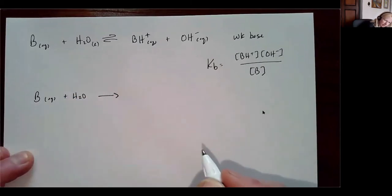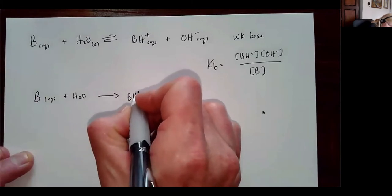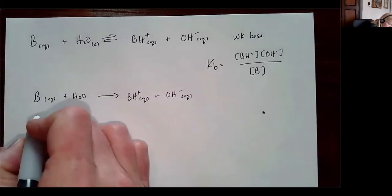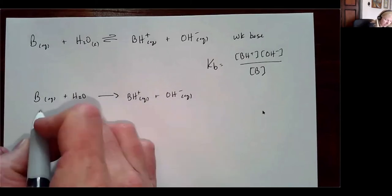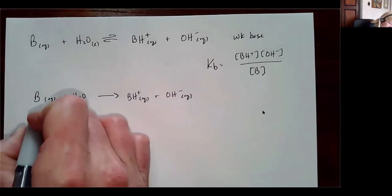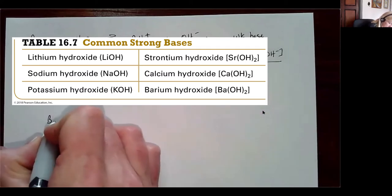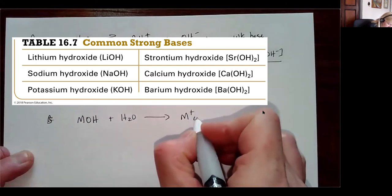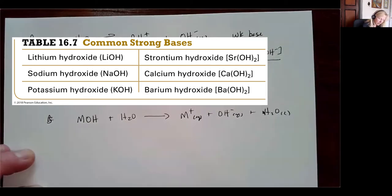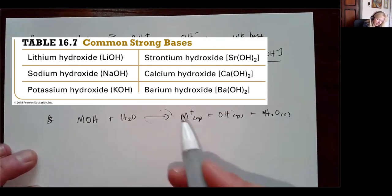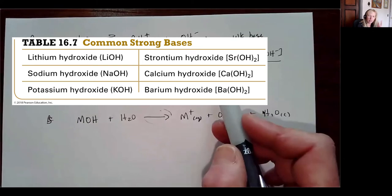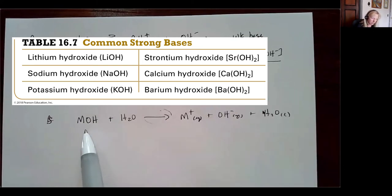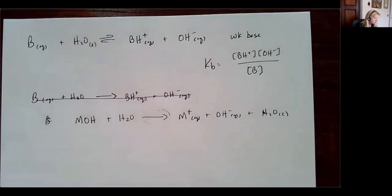A strong base is going to completely dissociate. Most of our strong bases already have a hydroxyl group, so the reaction is: metal hydroxide plus water forms the metal ion plus hydroxide ion. Since this is a strong base, it only goes in one direction and I won't have a Kb associated with it. I just take my initial starting concentration, and that gives me my hydroxide ion concentration.